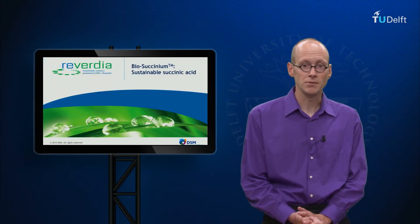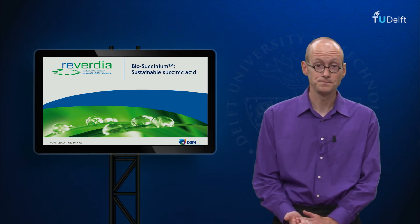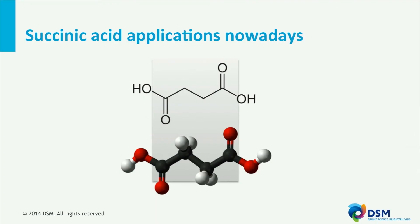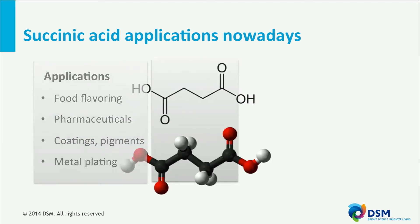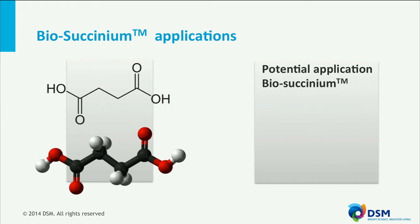From now we will focus on succinic acid. You might wonder why we are interested in succinic acid. Well, succinic acid is a very versatile molecule and can be used for many applications. Currently the majority of succinic acid is produced via a petrochemical-based process and is used for food, pharmaceuticals, coatings and metal plating. But we at DSM aim for a bio-based process which can replace the traditional chemical process. By using an agricultural feedstock as substrate we would be able to produce bio-succinic acid, or as our product is called, bio-succinium.